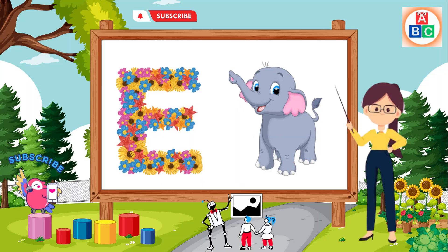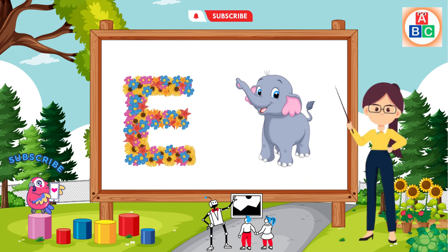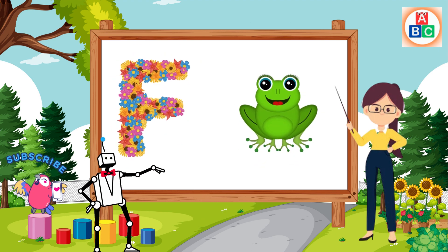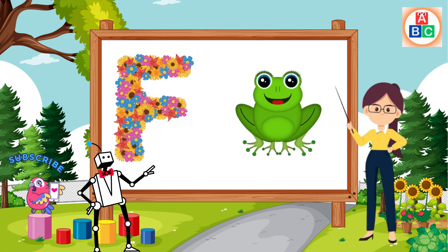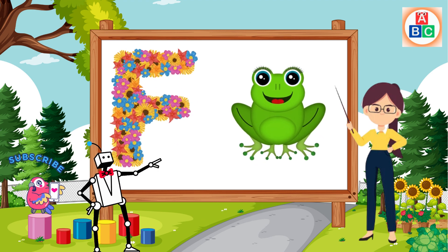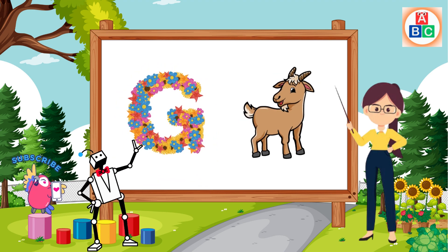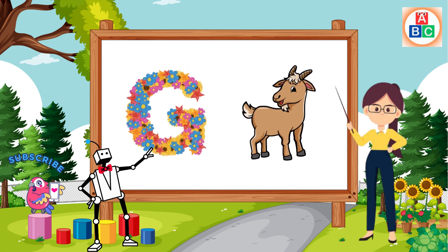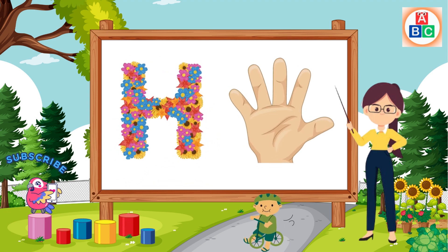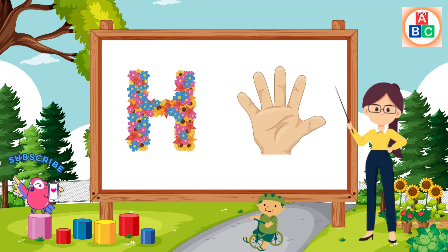E is for elephant, e-e-elephant. F is for frog, f-f-frog. G is for goat, g-g-goat. H is for hand, h-h-hand.